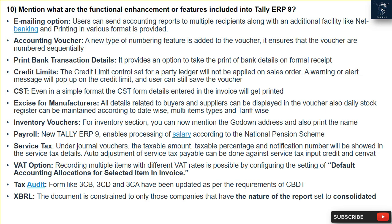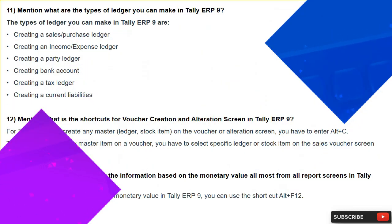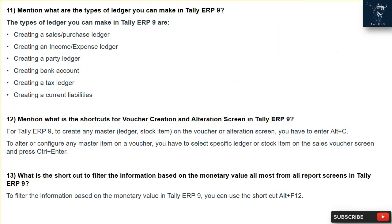VAT: recording multiple items with different VAT rates is possible by configuring the settings of default accounting allocations for selected items in invoice. Tax audit: forms like 3CB, 3CD, and 3CAA have been updated as per the requirements. The consolidated report is constrained to only those companies that have the nature of the report set to consolidated.